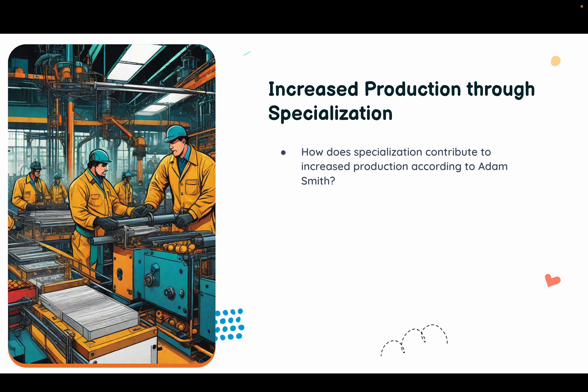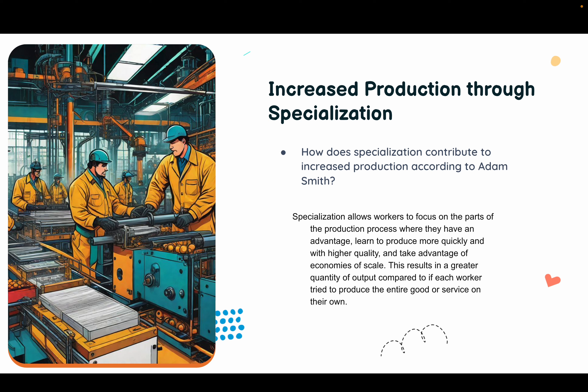How does specialization contribute to increased production according to Adam Smith? Specialization allows workers to focus on the part of the production process where they have an advantage, learn to produce more quickly and with higher quality, and take advantage of economies of scale. This results in a greater quantity of output compared to if each worker tried to produce the entire good or service on their own.